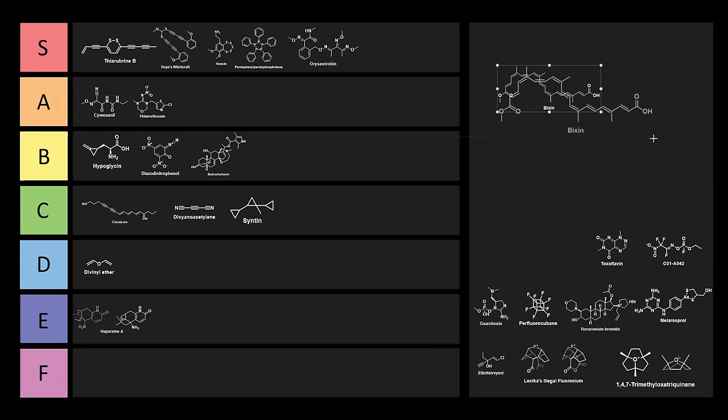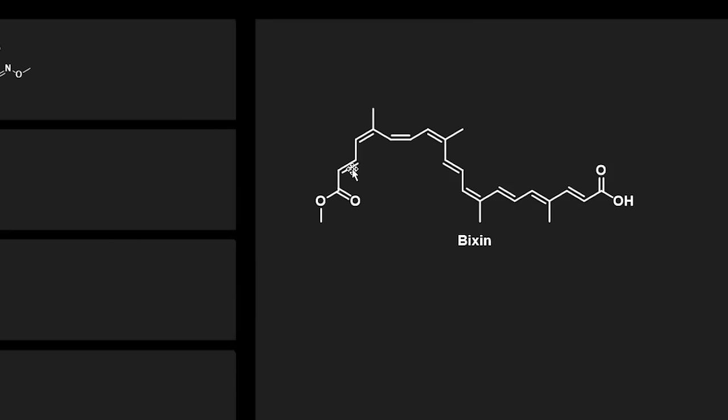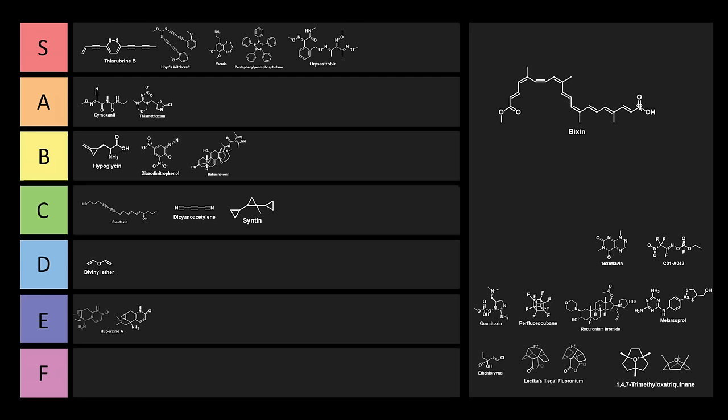Here, we have Bixen. Today, we're going to be mixing with Bixen, because this is the most conjugated molecule I think I've ever featured on a tier list. Here, we have 1, 2, 3, 4, 5, 6, 7, 8, 9, 10, 11 double bonds in a row. Yes, I'm counting the C double bond O, because they are still double bonds. Bixen is an apocarotenoid found in the seeds of Bixa orellana, also known as the Achaeote tree, from which it derives its name. It's commonly extracted from seeds to form annatto, which is a natural food coloring.